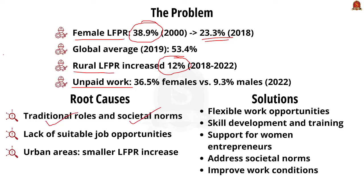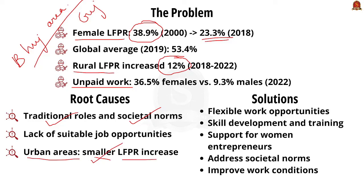For example, in the slums of Bhuj area in Gujarat, women prefer home-based occupations like bandhani and embroidery due to their flexibility, even though these offer low income. This is largely due to a lack of other employment options. Urban areas have seen smaller increases in female labor force participation, indicating a shortage of suitable opportunities. To enhance female employment, it is crucial to address these constraints, create flexible work opportunities, and promote entrepreneurial activities and skill development.